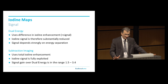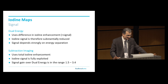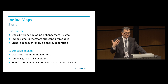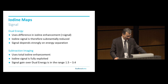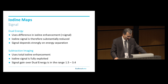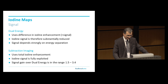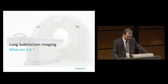To compare again: dual energy uses the difference in iodine enhancement, so the iodine signal is substantially reduced by the amount of the high KVP signal, and the energy separation is crucial. But in subtraction imaging, the signal gain is higher, but you need excellent spatial registration.